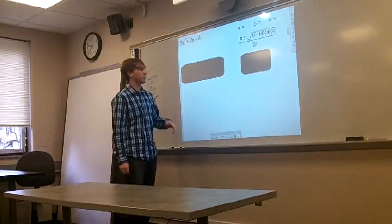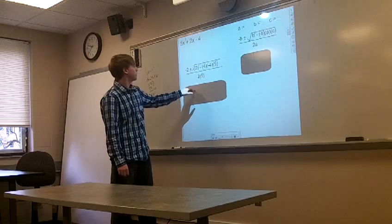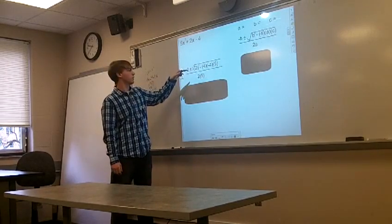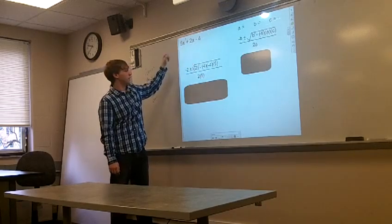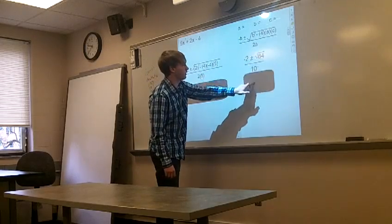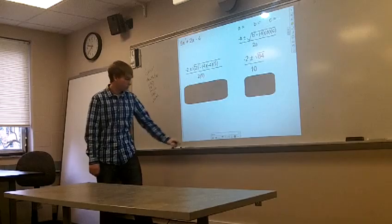So using those values that you just told us, we're going to plug into the formula. We'll have negative 2 plus or minus the square root of 2 squared minus 4 times negative 4 times 5, all over 2 times 5. And when you do your math, you're going to get that. And again, that's going to give you those x-intercepts on the parabola.